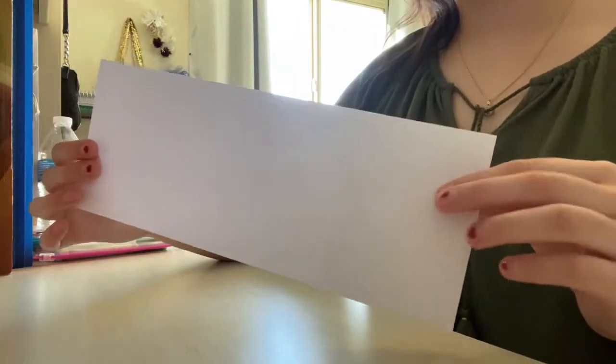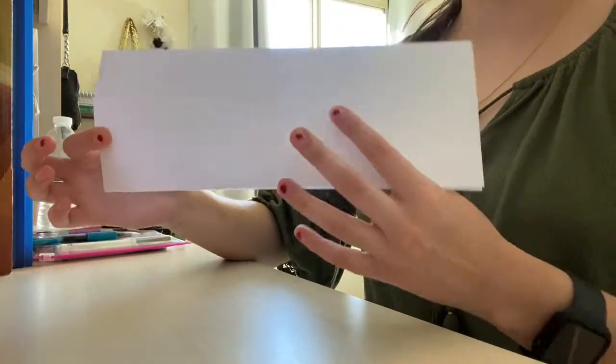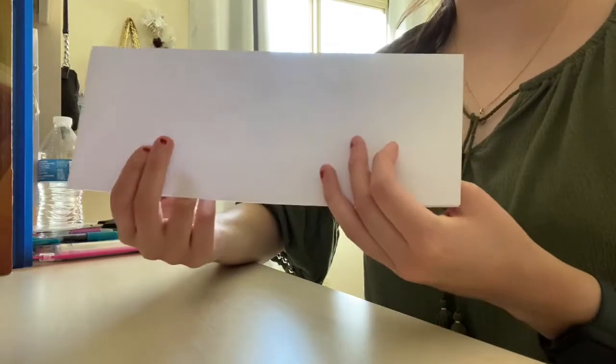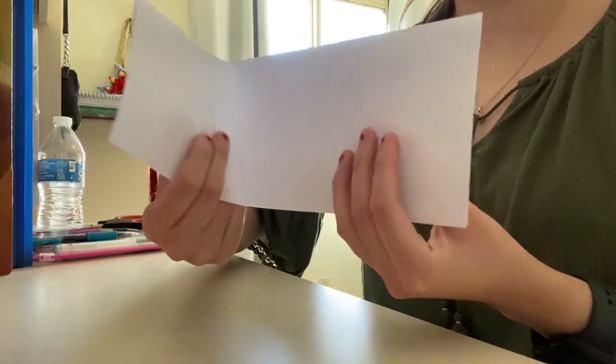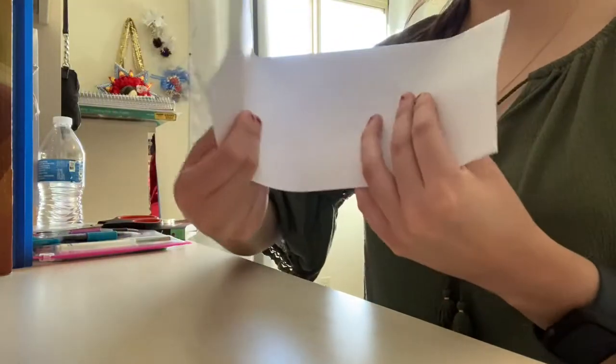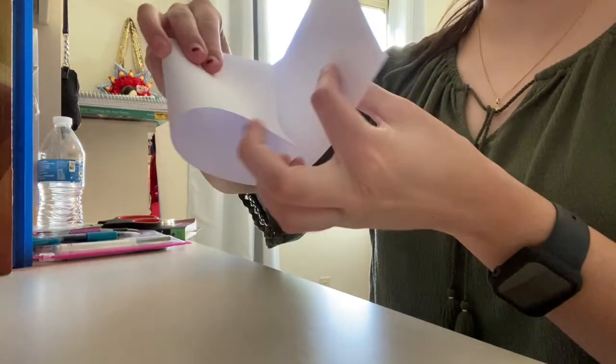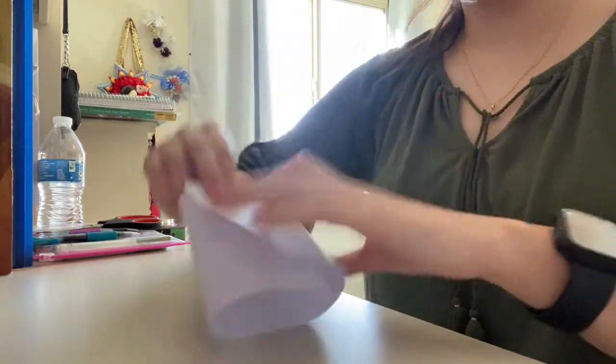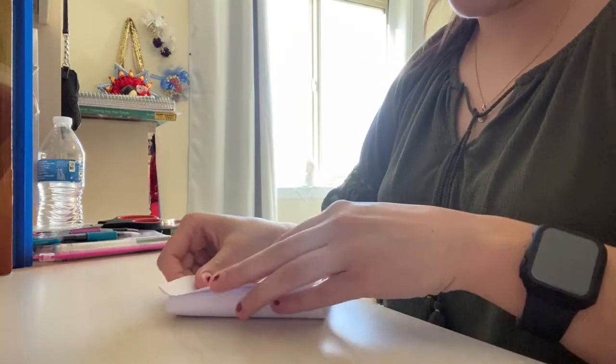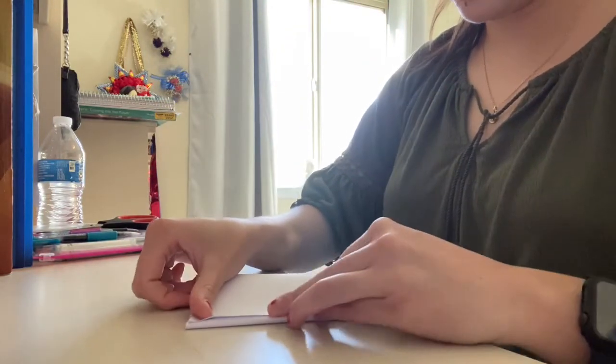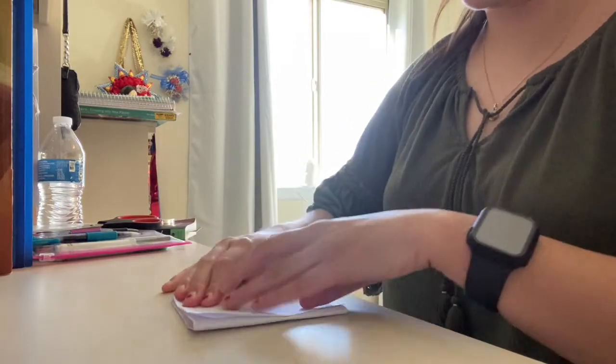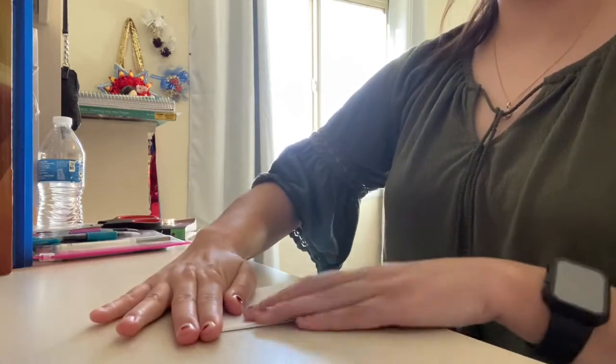Now once you have your hot dog fold, you're going to fold the hot dog into three parts. So you usually kind of just get a guesstimate, roughly, it doesn't have to be perfect. And just make sure you push down on the creases.